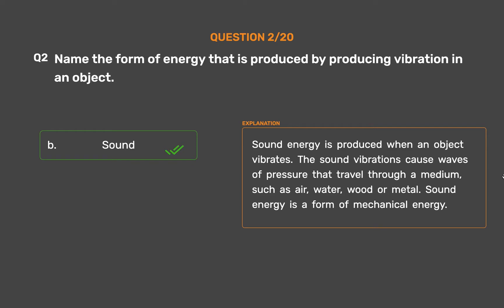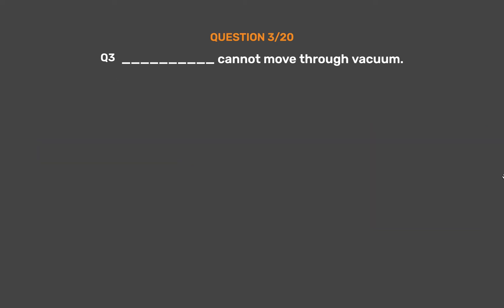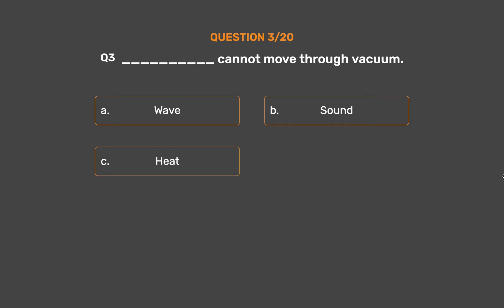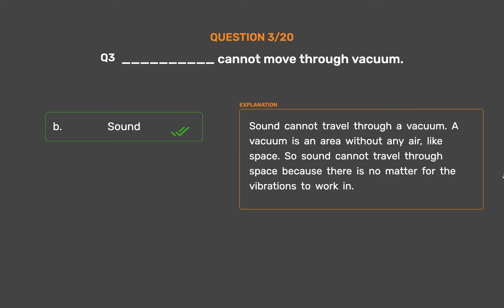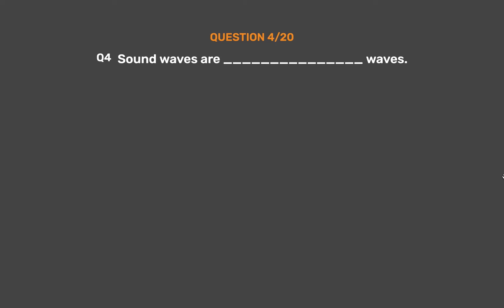Sound energy is a form of mechanical energy. Question number 3. Underscore cannot move through vacuum. Option A, Wave; Option B, Sound; Option C, Heat; Option D, None of these. The correct answer is Option B, Sound. Sound cannot travel through a vacuum. A vacuum is an area without any air, like space. So sound cannot travel through space because there is no matter for the vibrations to work in.